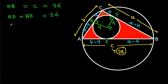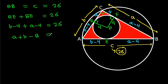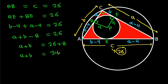AE is b minus 4 and BE is a minus 4, so (b minus 4) plus (a minus 4) equals 26. That gives a plus b minus 8 equals 26, so a plus b equals 34.